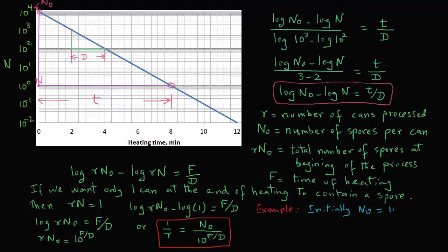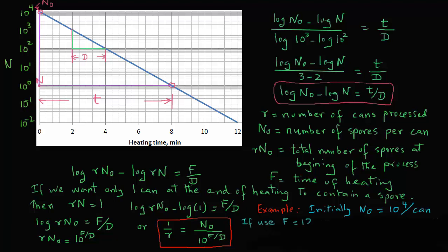Let's look at an example. Let's say initially, there are 10 raised to power 4 spores per can. If we are going to heat these cans to a total time that is 12 times the d value, so f, our total time of heating, equals 12 times d.